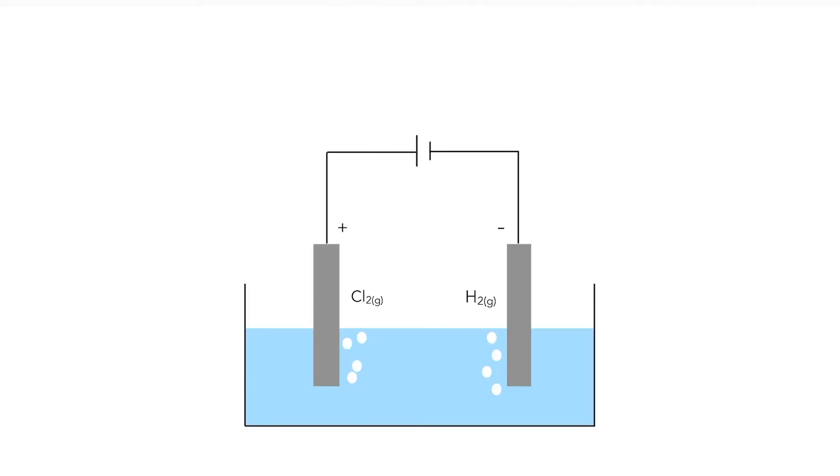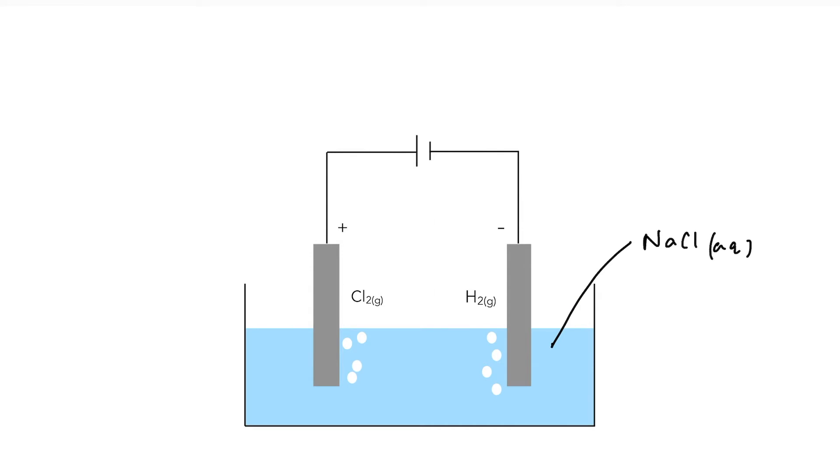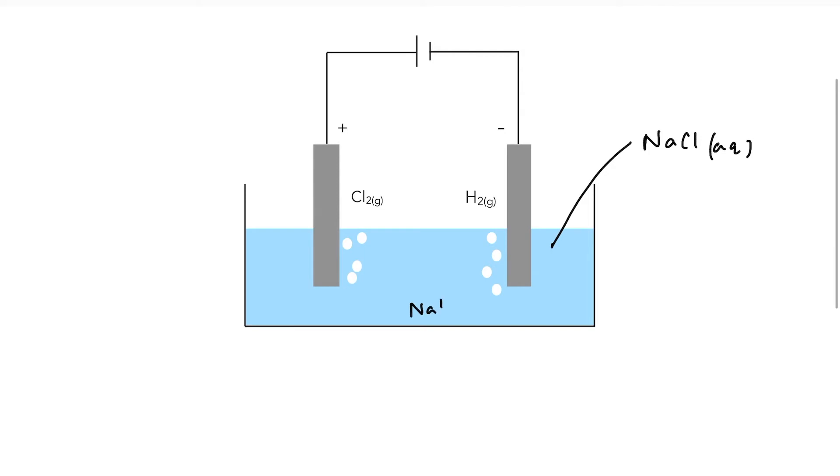The electrolysis of brine or sodium chloride solution is the basis of the chloralkali industry. By mining rock salt, making it up into a fairly concentrated solution, we can produce, via electrolysis, chlorine and sodium hydroxide and hydrogen, all three of which are really important industrial products. So our electrolyte is essentially sodium chloride in solution, which means that in my beaker, I'm going to have sodium ions and chloride ions and plenty of water molecules.